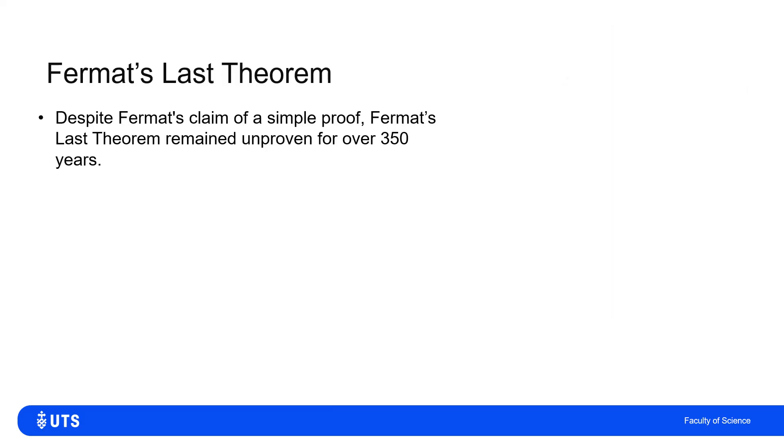Now, the reason that Fermat's last theorem holds the place in mathematics that it does is because it actually remained unproven for over 350 years, despite his claim that he had a simple proof that he just didn't have room to write down.